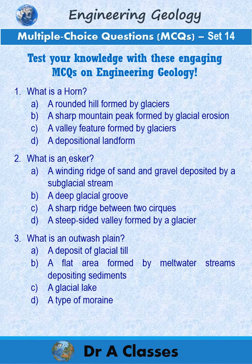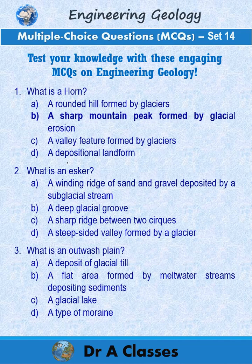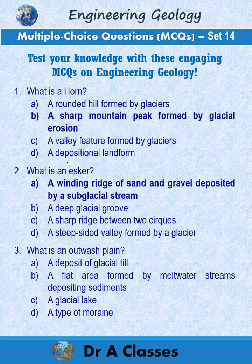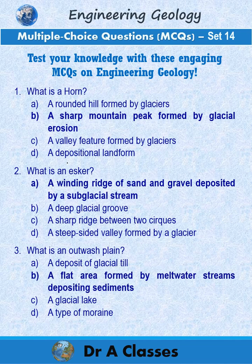Answer to question 1 is B: A sharp mountain peak formed by glacial erosion. Answer to question 2 is A: A winding ridge of sand and gravel deposited by subglacial streams. Answer to question 3 is B: A flat area formed by meltwater streams depositing sediments.